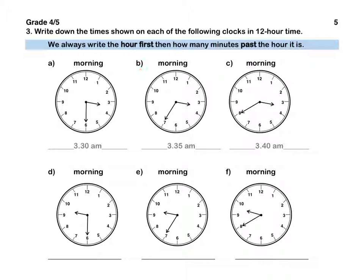For B, we are looking at past 3 o'clock so it is in between 3 and 4. It is not yet 4 o'clock and it is now 35 minutes past 3 so we write 3.35 AM because it is morning. For C, the minute hand is on the 8 so it means that it is 40 minutes past 3, so we write 3.40 AM. Pause this video to complete questions D, E and F by yourself.